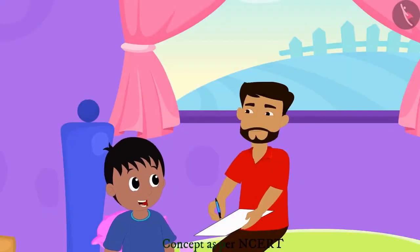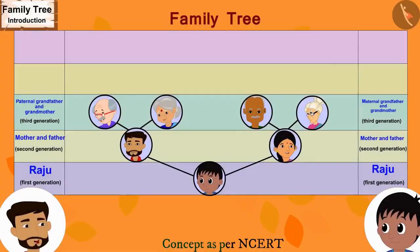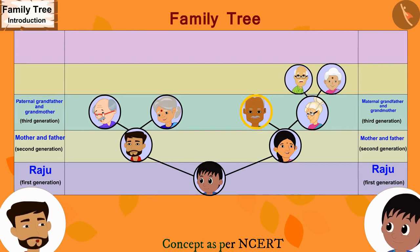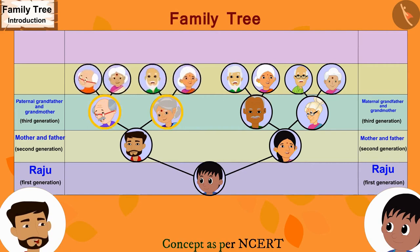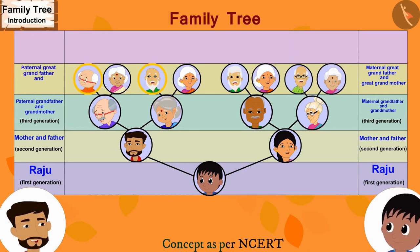Now our family tree is complete, isn't it, father? No, Raju, we have yet to add more people to it. For your maternal grandmother's parents, we will draw two lines and write their names. Then we will draw two lines for your maternal grandfather's parents and write their names. The names of your paternal grandfather and grandmother's parents will also be added in the same way. This is our fourth generation.